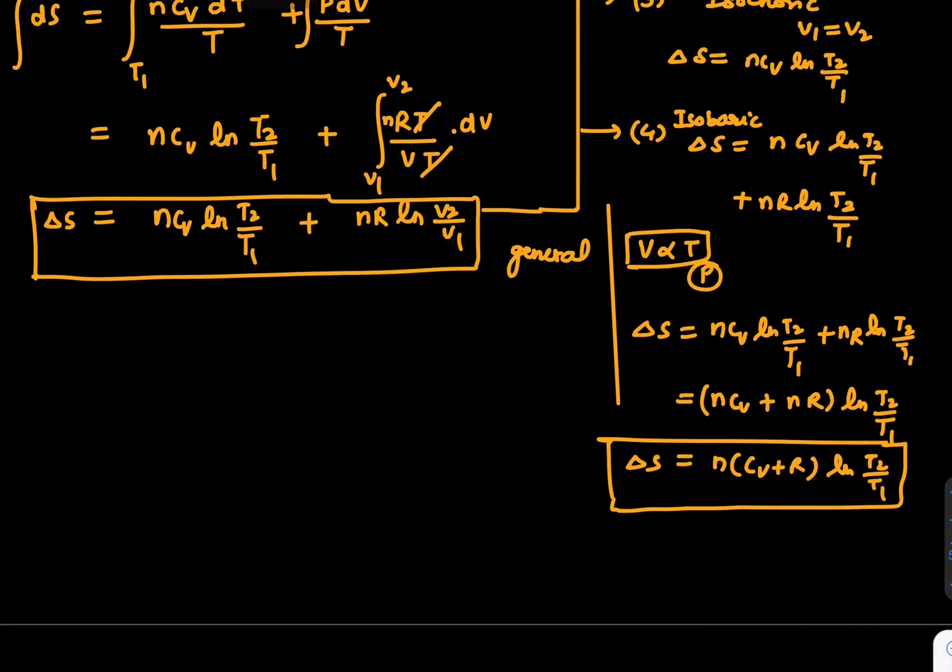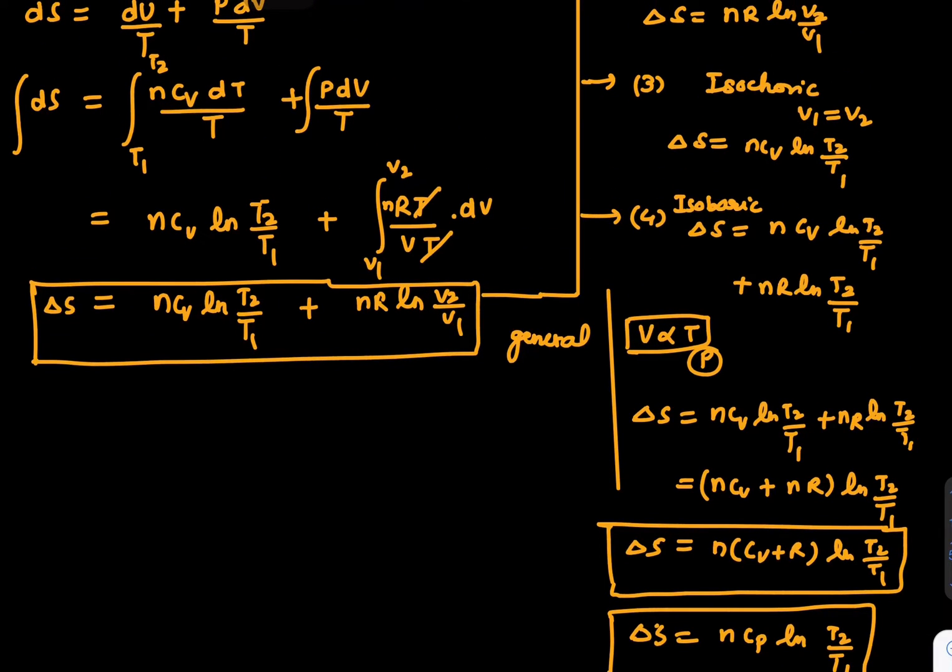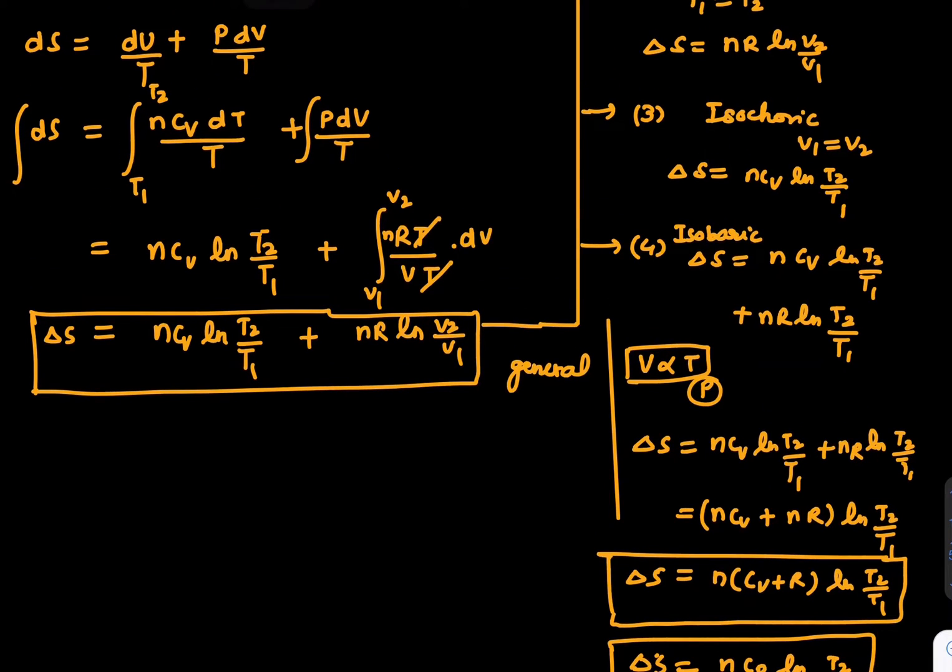Now just come to the question. The question gives you 2 moles, so n = 2 moles. You are solving for ΔS. What is the value? ΔS = nCp ln(T2/T1).